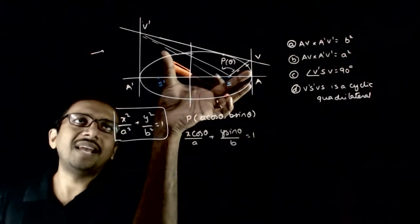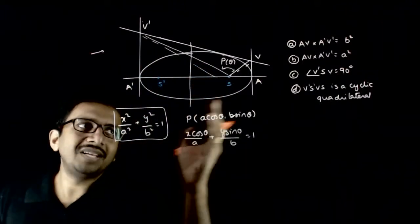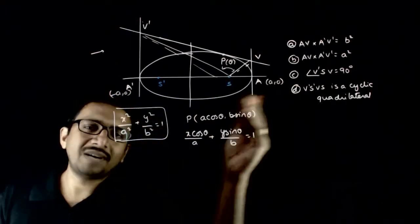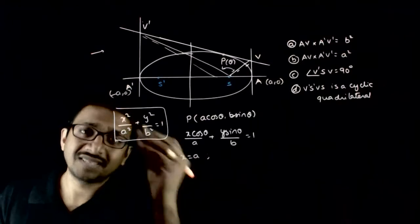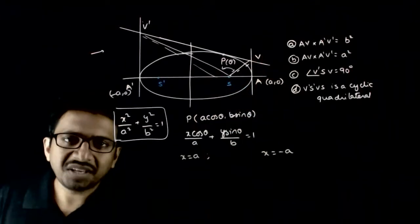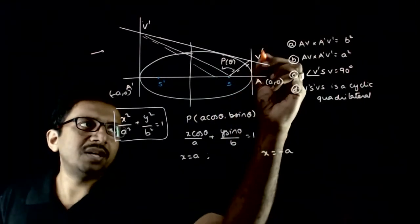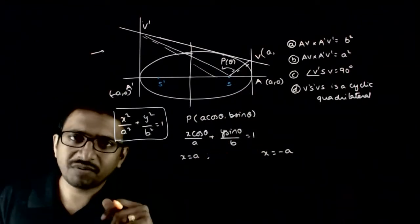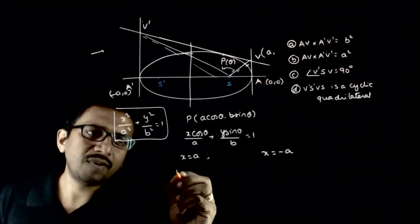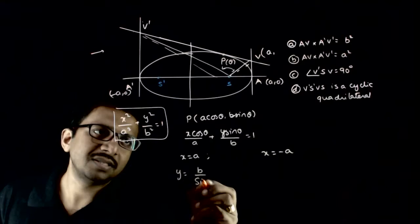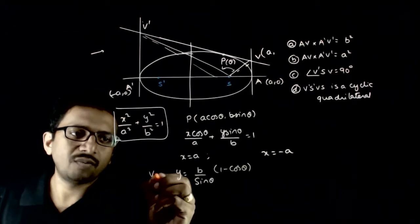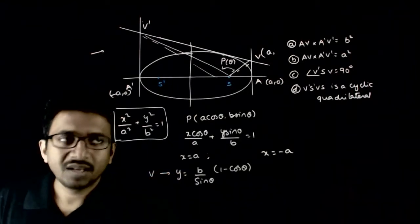The tangents at the vertices are x = a and x = −a, since the vertices are (a, 0) and (−a, 0). To find point V, the x-coordinate is a. Substituting x = a into the tangent equation, the y-coordinate of V is (b / sinθ)(1 − cosθ).